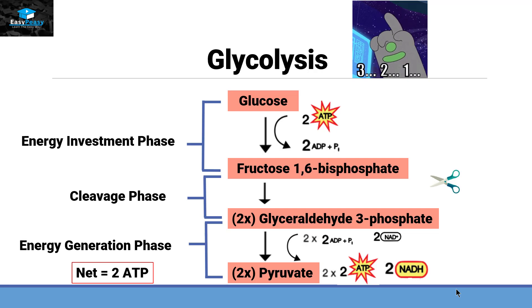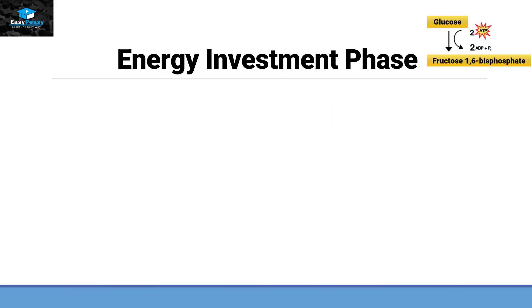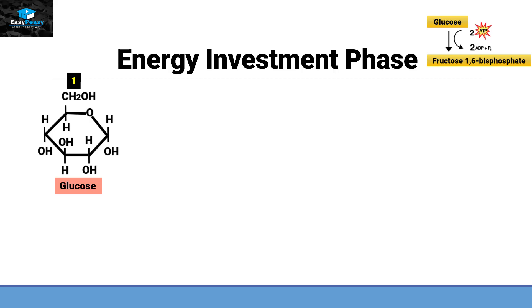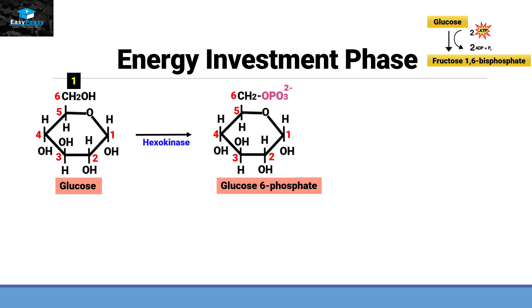In the energy investment phase, step 1 begins with the 6-carbon molecule glucose. With the help of hexokinase, glucose converts into glucose 6-phosphate. The kinase enzyme transfers a phosphate group from one molecule to another — in this case, taking the phosphate group from ATP (converting it into ADP) and shifting it to glucose to produce glucose 6-phosphate.